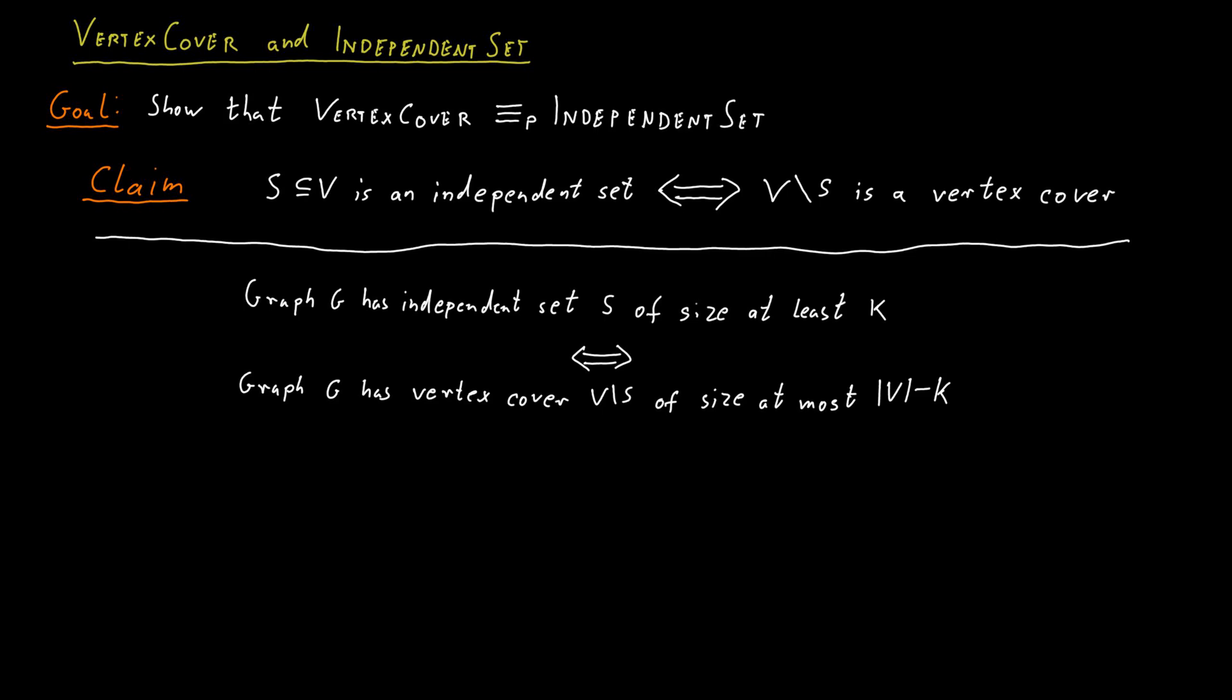This gives us our reduction. The inputs for both problems are of the form (G, K), where G is a graph and K is a number. We define a polynomial time computable function F that takes G and K and produces the same graph G but replaces K by |V| minus K.